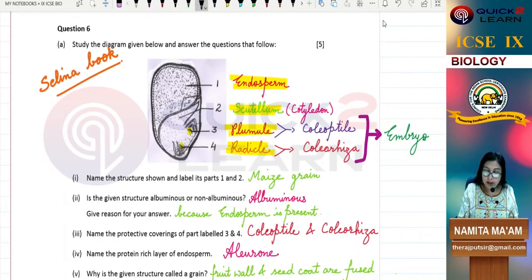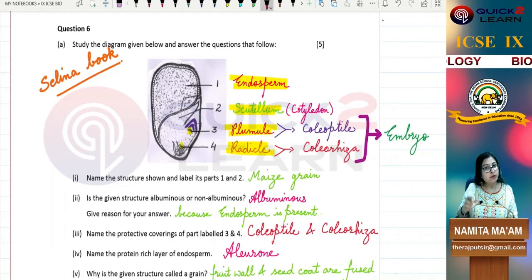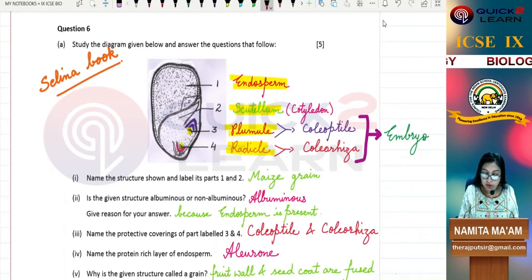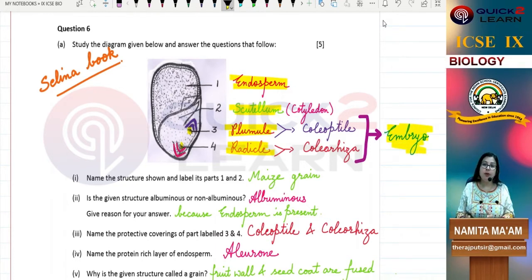These are the protective coverings and they are known as coleoptile and coleorhiza. Coleoptile and coleorhiza. Radicle gives rise to the root of the plant. All together they form the embryo. Everything in your mind should be clear at this stage. There is no confusion in your mind about maize grain diagram.